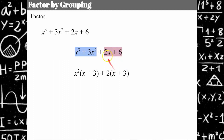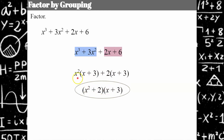I ask myself: what times X plus three is equal to two X plus six? And it's two. That two is the greatest common factor of the last two terms. So I rewrite this as the common binomial factor X plus three, multiplied by X squared plus two. Now I check if it's completely factored. X squared is a perfect square, but two is not a perfect square, so this binomial X squared plus two cannot be factored further. Therefore this four-term polynomial is completely factored.